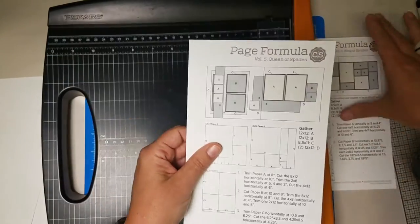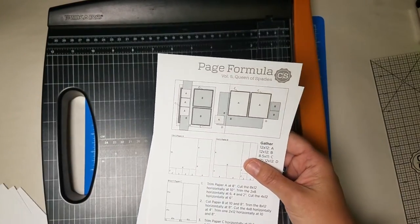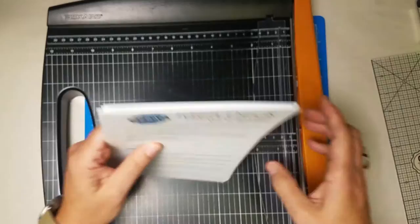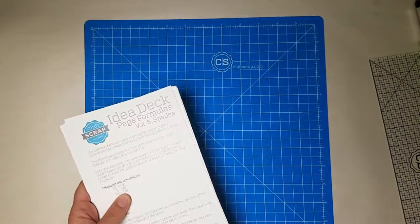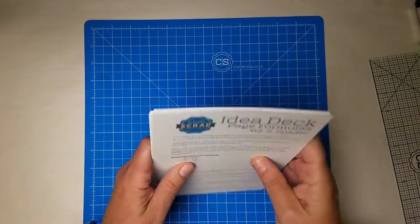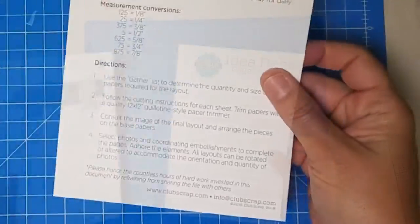So you can do the same thing for the formulas we send you every month as a member. Just print them out onto a nice stock so that it's nice and sturdy and add it to your beautiful new binder.